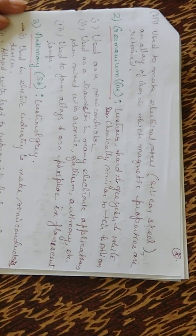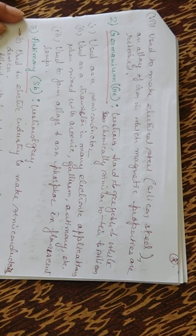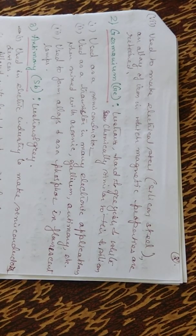Then it is used to make electrical steel, that is silicon steel. It is an alloy of iron in which magnetic properties are retained.